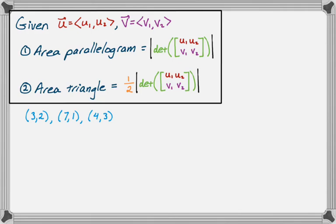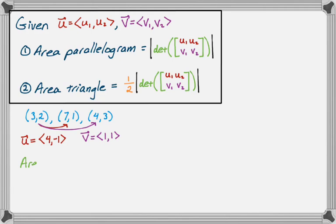Say we have three points determining a triangle in the plane. I'll create vectors: vector u goes from the first to the second point — change in x is 4, change in y is negative 1, so u = (4, −1). Another vector goes between two other points — change in x is 1, change in y is 1, so v = (1, 1). The area is one-half of the absolute value of the determinant: 4 times 1 minus 1 times negative 1 equals 4 plus 1 equals 5. So the area of the triangle is five-halves. Knowing this makes it incredibly fast to solve these problems.